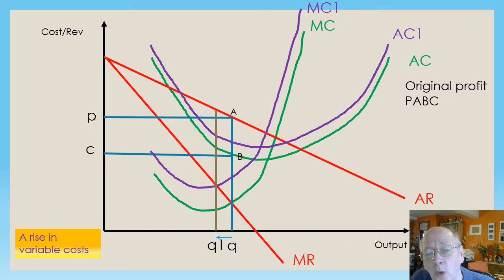So what's the new quantity? Profit maximization is still MC equals MR, except now we've got a new MC curve. So we're looking at where the red MR curve cuts the new purple MC curve, which is going to be quantity Q1. So quantity sold will drop.